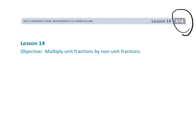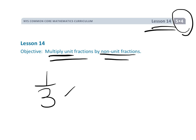This is fifth grade module 4 lesson 14 where we are going to be multiplying unit fractions by non-unit fractions — like 1/3 times 3/7. We're going to continue the theme of teaching how to get the answer in an understandable way rather than just teaching a rule that students are supposed to blindly follow. Let's get going.